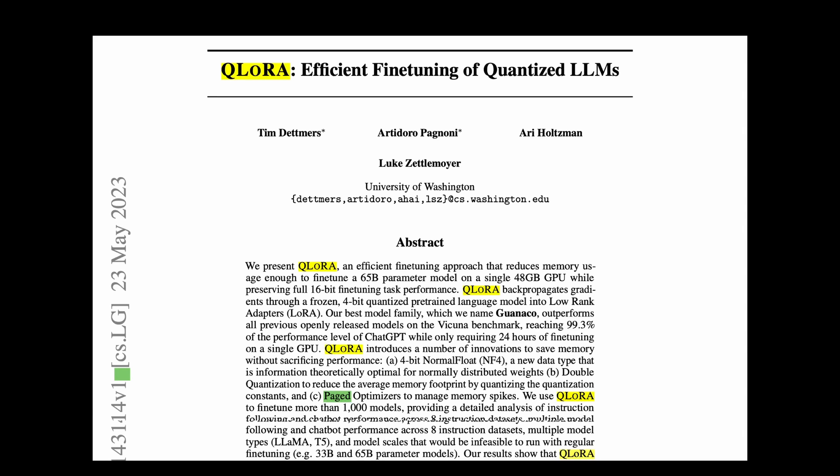The main motivation for QLoRa is to achieve fine-tuning on a single GPU. It does this with only three innovations: 4-bit normal float, a new data type that is information theoretically optimal for normally distributed weights, double quantization to reduce the average memory footprint by quantizing the quantization constants, and page optimizers to manage memory spikes.